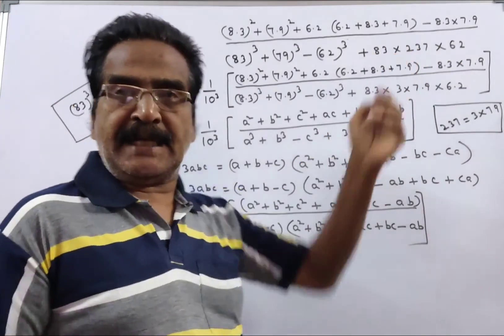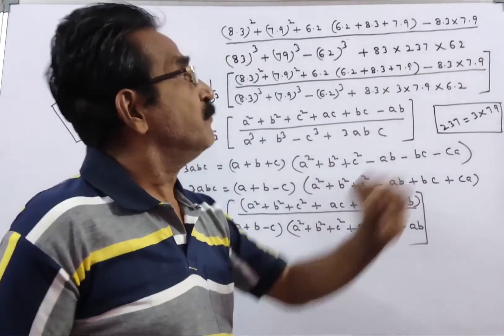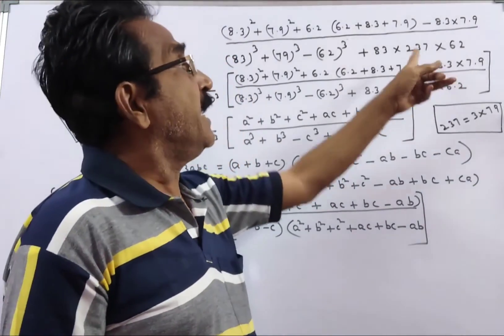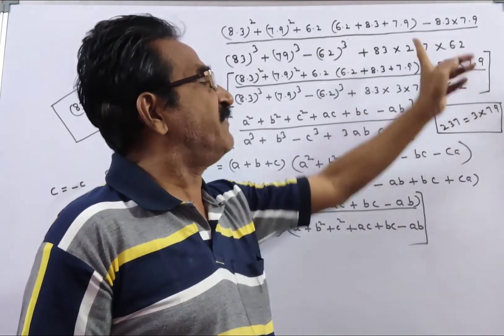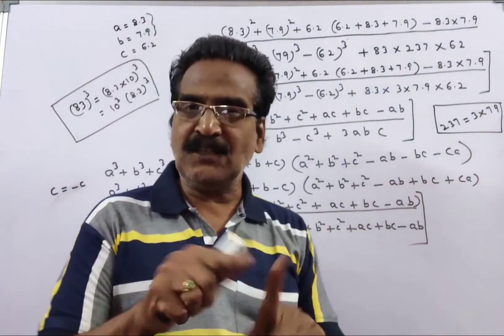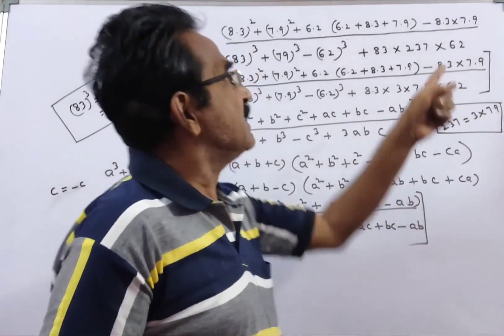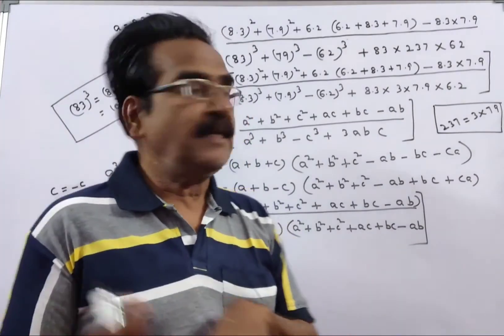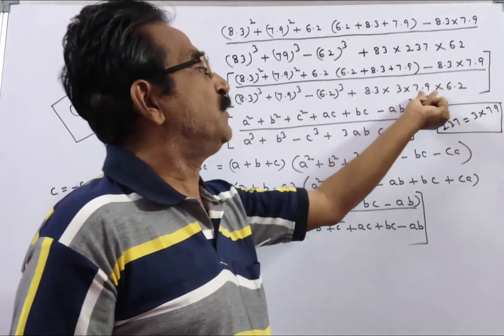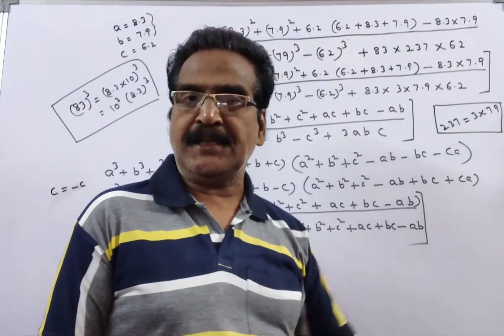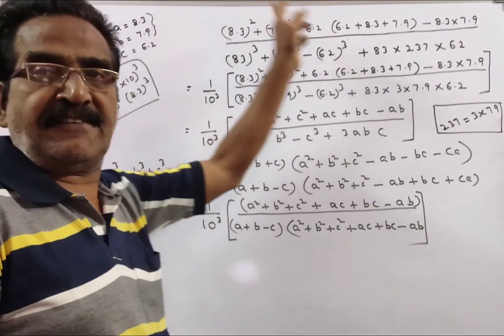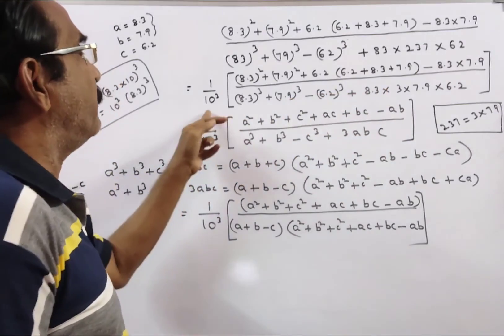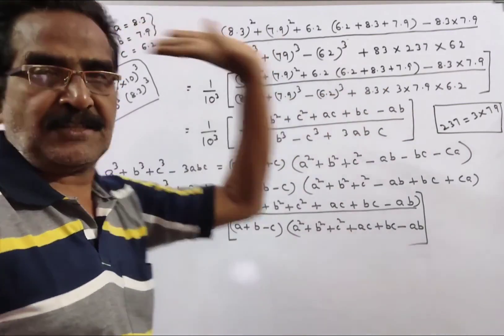83 can be written as 8.3 into 10. 62 can be written as 6.2 into 10. And here, 237 can be written as 3 into 79, and 79 can be written as 7.9 into 10. So here we have 10 into 10 into 10 cube. So the given expression can be reduced to 1 by 10 cube.